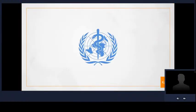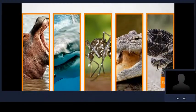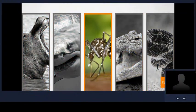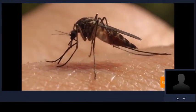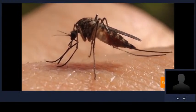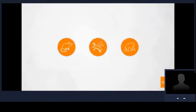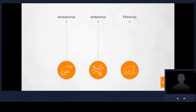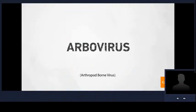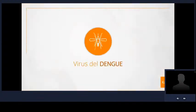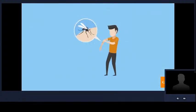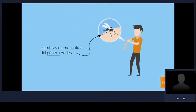De acuerdo con la Organización Mundial de la Salud, los mosquitos son uno de los animales más mortíferos del planeta. Cada año son responsables de millones de muertes debido a su capacidad para transmitir enfermedades a las personas. Los virus transmitidos por mosquitos se clasifican dentro del grupo de los arbovirus. Uno de ellos es el dengue, una infección producida por el virus del mismo nombre, transmitida por la picadura de hembras de mosquitos del género Aedes.